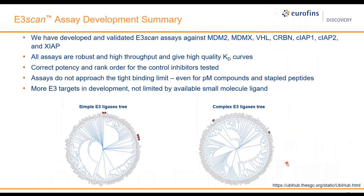In summary, we have developed commercially available E3 scan assays against seven E3 ligase targets. All assays are robust, high-throughput, and give high-quality KD curves. The assays demonstrate correct potency and rank order for control inhibitors tested. The assays do not approach the tight binding limit and can detect picomolar binding of compounds and peptides. Humans have around 600 E3 ligase members, so we have more assays in development not yet offered commercially. For assay development, we do need a ligand, but we are not limited to small molecule ligands — we have used peptides as ligands in the past and are developing additional targets using this approach.